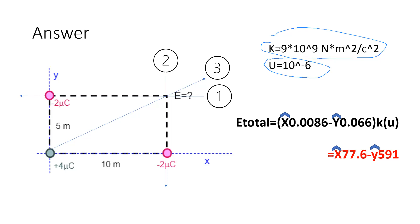We plug KU into the E total and get the final answer: x hat times 77.6 minus y hat times 591. Thank you so much for watching.